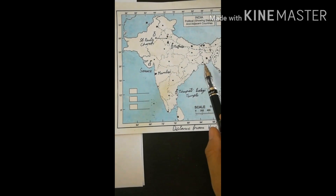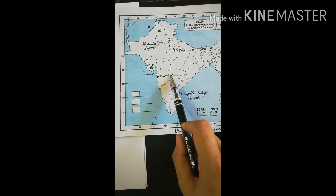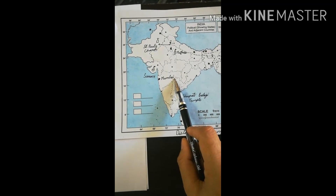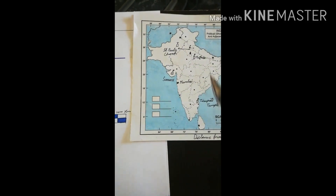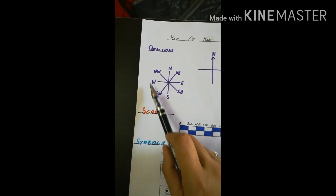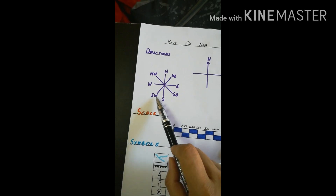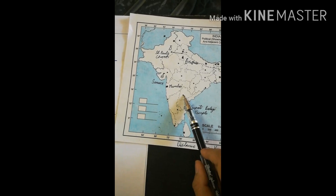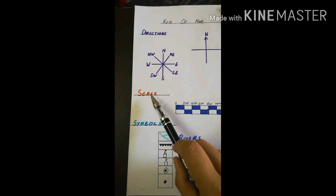Now let me ask you: where is Mumbai situated? In which direction is Mumbai? You can tell that this is west and this is south, but Mumbai is not exactly in the west and not exactly in the south. It is actually between west and south — this is south-west. This is how you can identify the direction of any state.